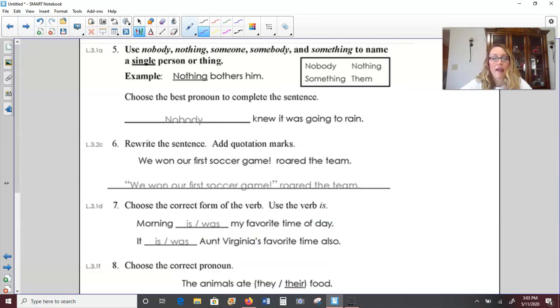Over to the next page. Number five says use nobody, nothing, someone, somebody, and something to name a single person or thing. For example, nothing bothers him. Him is singular, so we would use nothing. Choose the best pronoun to complete the sentence. Blank knew it was going to rain. We're going to have to go with nobody knew it was going to rain.